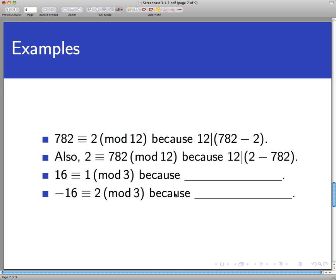So let's instantiate this definition with some examples here. First of all, using the one we saw earlier, because we know that 12 divides 782 minus 2, we knew that from looking at the list of multiples of 12. We can turn that statement back around and say that 782 is congruent to 2 mod 12.